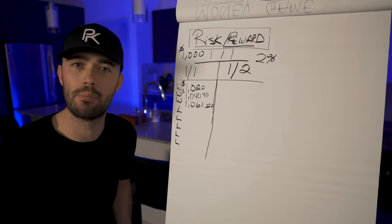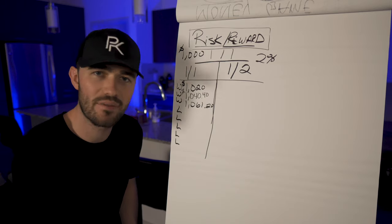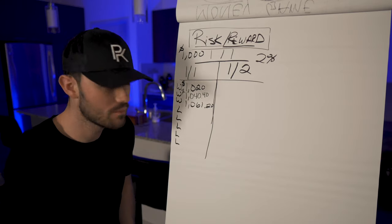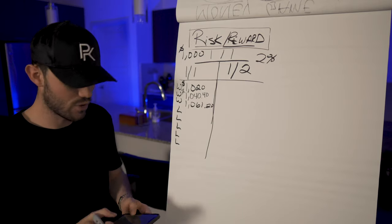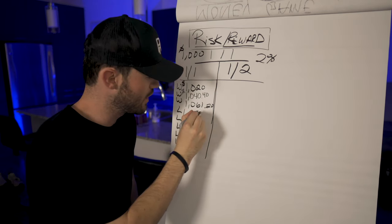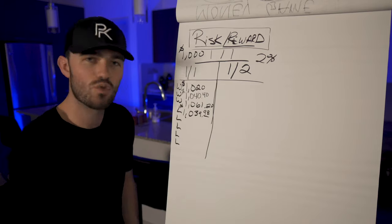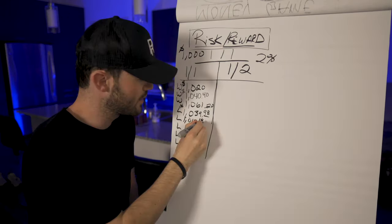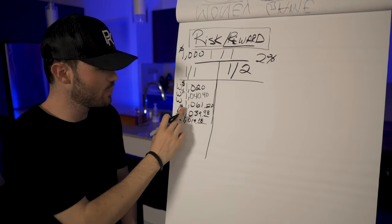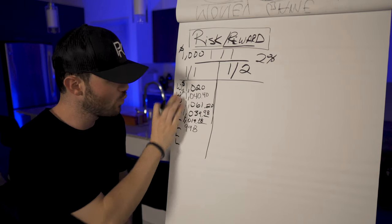Now let's say we go through a typical losing streak. Losing the first trade leaves us with one thousand thirty-nine dollars and ninety-eight cents — we won three, lost one, still in profit. Second loss brings us to one thousand nineteen dollars and eighteen cents, still about 1.9% profit. On the third loss, we're at nine hundred ninety-eight dollars — we are now officially negative, three wins and three losses.